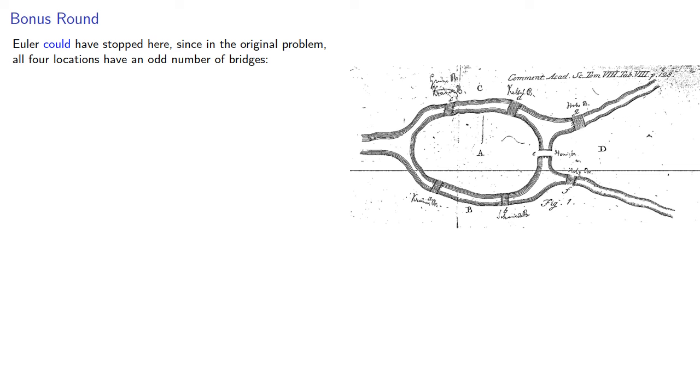Euler could have stopped here, since in the original problem, all four locations have an odd number of bridges leading to them. And what would happen is we'd start at one location, end at another location, but there would be two locations we couldn't have taken all the bridges to.